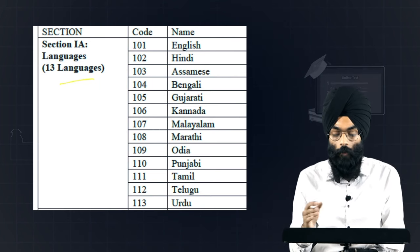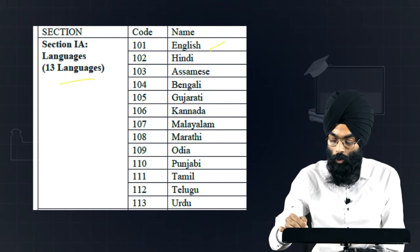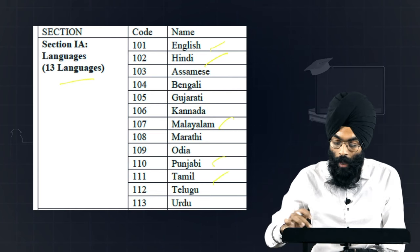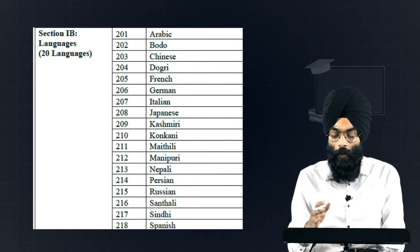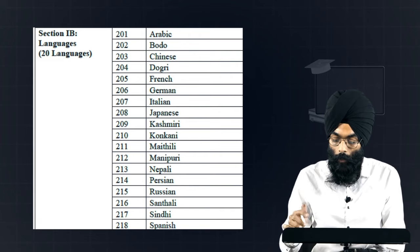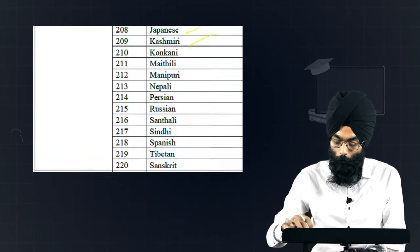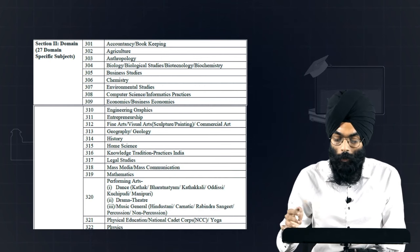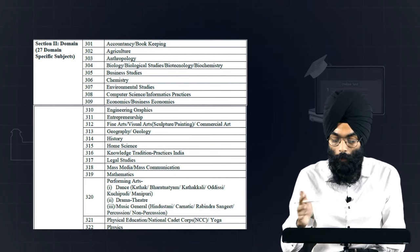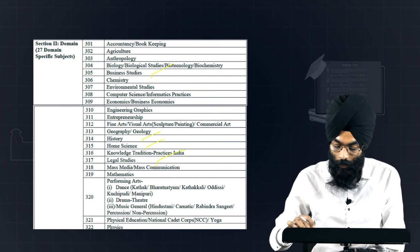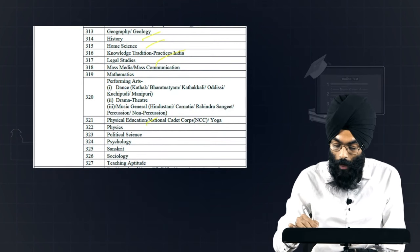In List 1A they have given 13 languages which include English, Hindi, Malayalam, Telugu, and Punjabi. In List 1B they have given other languages which could be Arabic, German, Japanese, and Kashmiri. The list of 27 domain-specific subjects includes accountancy, agriculture, business studies, history, home science, legal studies, physical education, and maths.